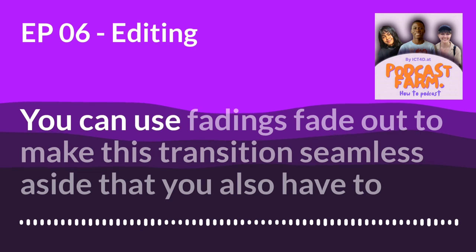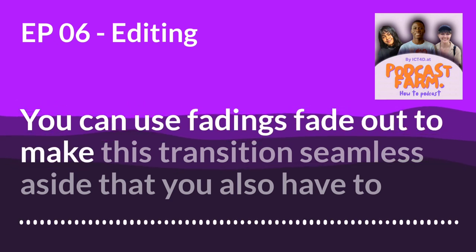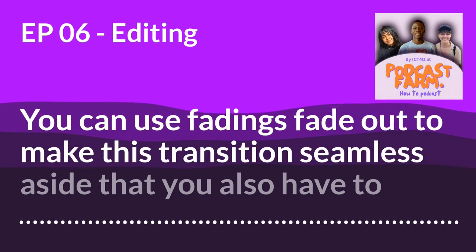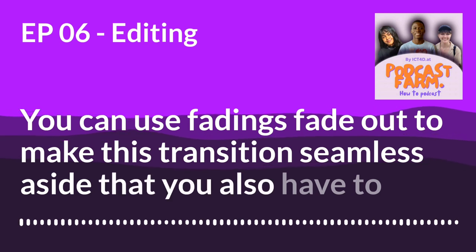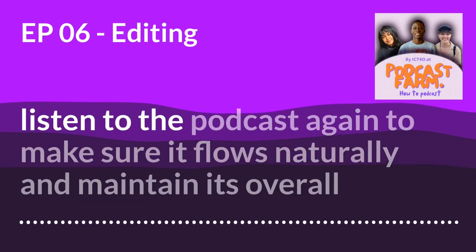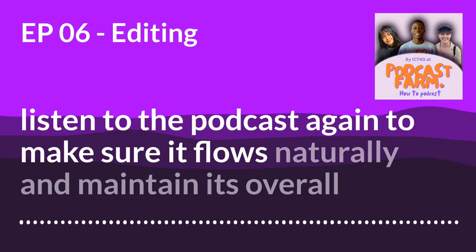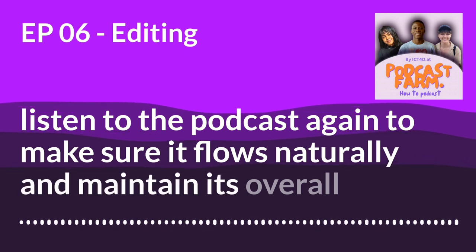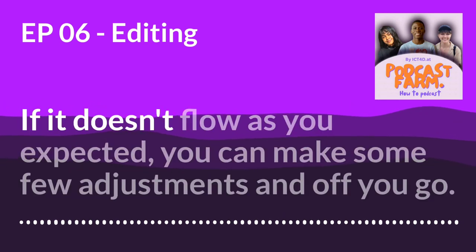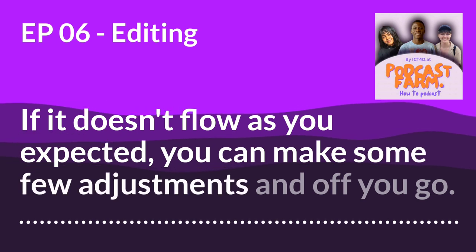Another thing to look at is smooth transitions between segments or topics. You can use fade-ins and fade-outs to make these transitions seamless. Aside from that, you also have to listen to the podcast again to make sure it flows naturally and maintains its overall coherence. If it doesn't flow as you expected, you can make a few adjustments.